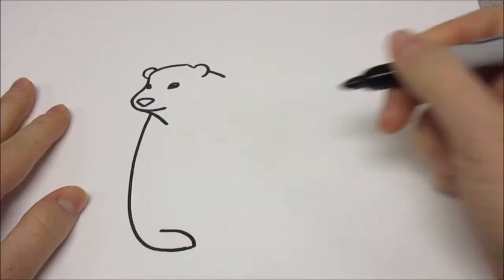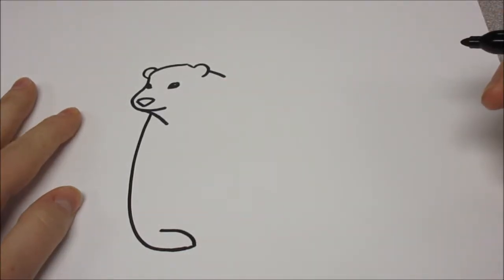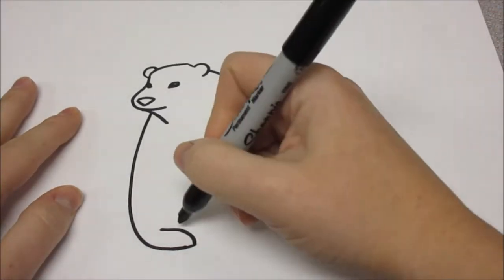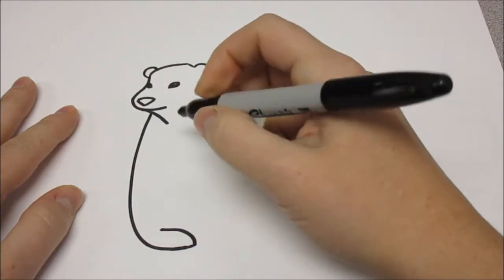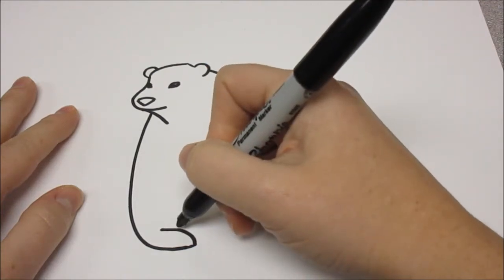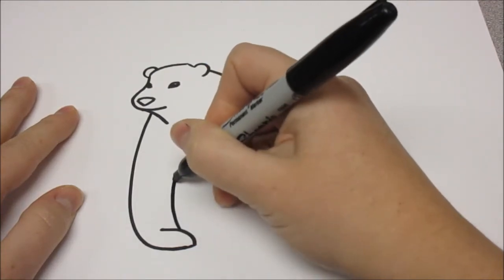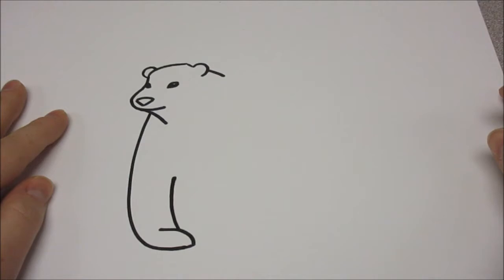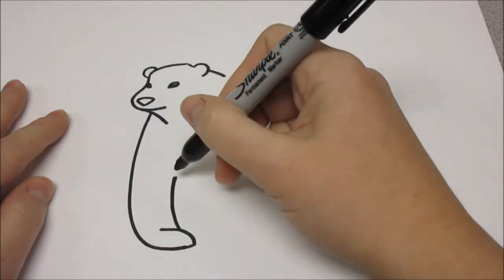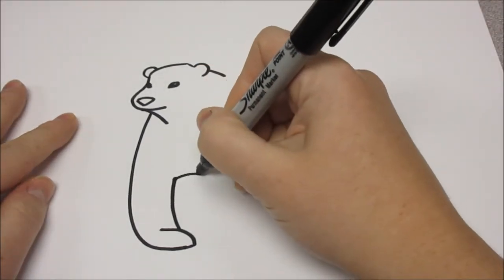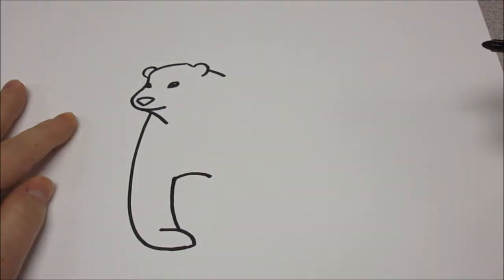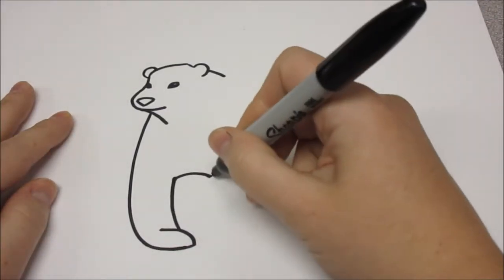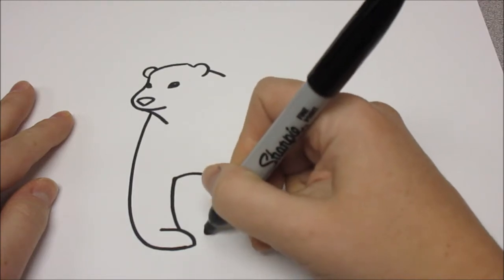Okay, and then we're going to curl over for a paw. And then we're going to go up. Okay, cross the chest and come down for the other paw.